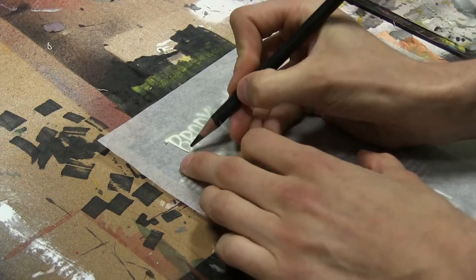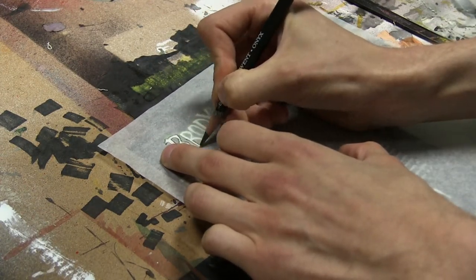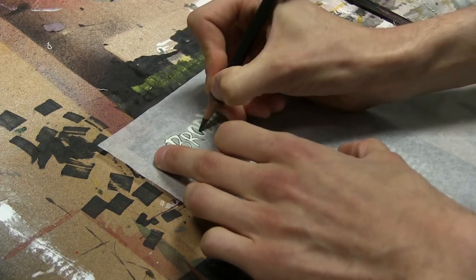Before the onset of programs like Photoshop, people actually had to trace their design elements by hand rather than just using a magic wand tool. For this example, I took Mark Crilley's Brody's Ghost graphic novel and traced over the font of the title.